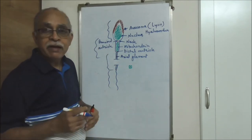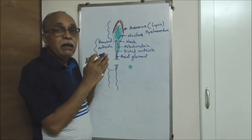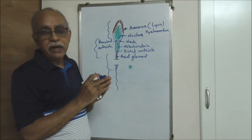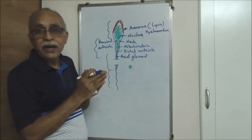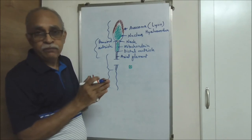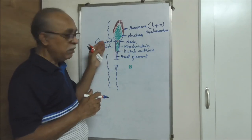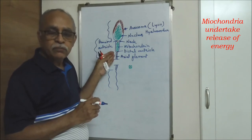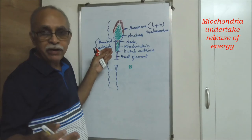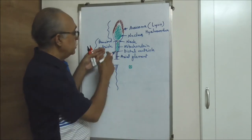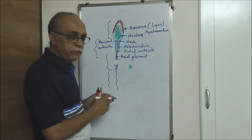Mitochondria are meant for generating energy. This is a motile gamete, so it has to be able to move, and that movement requires a large amount of energy, which is generated by oxidative breakdown undertaken by the mitochondria — oxidative breakdown of a suitable source of energy, either a carbohydrate or a fat.